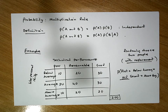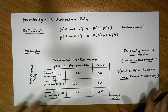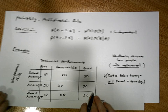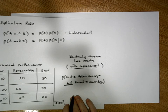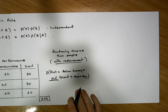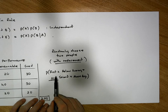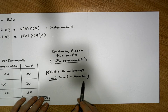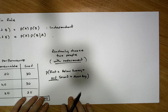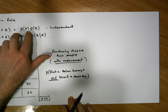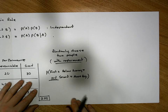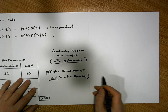In our with-replacement situation, the probability that the first person is below average and the second is above average is simply the product of the individual probabilities.